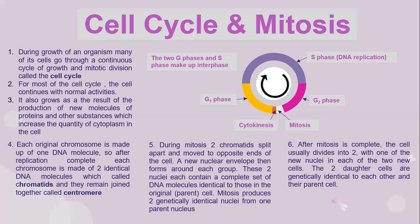the cells continue with normal activities. They also grow as a result of the production of new molecules of protein and other substances, which increase the quantity of cytoplasm in the cells. Each original chromosome is made up of one DNA molecule. After replication is complete, each chromosome is made up of two identical DNA molecules which are called chromatids, and they remain joined together at a region called the centromere.